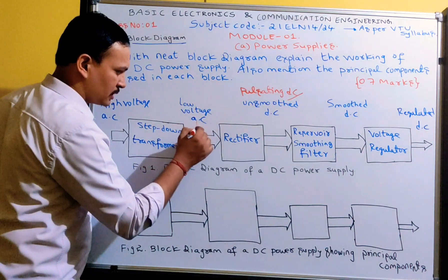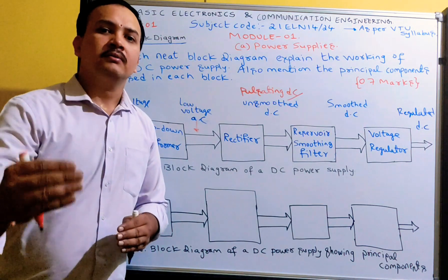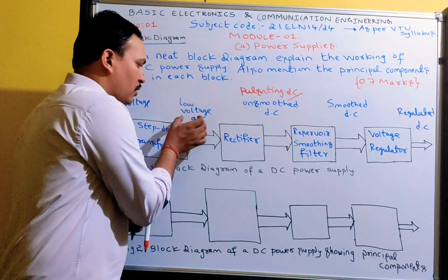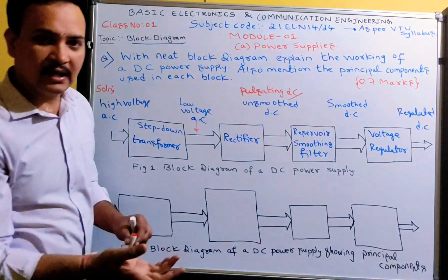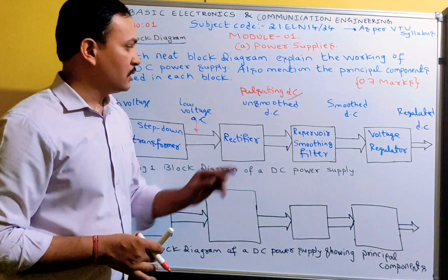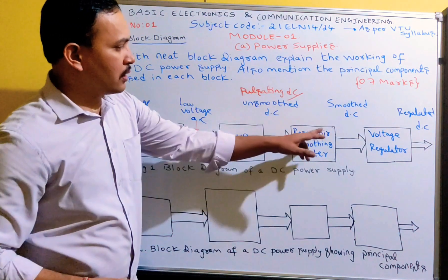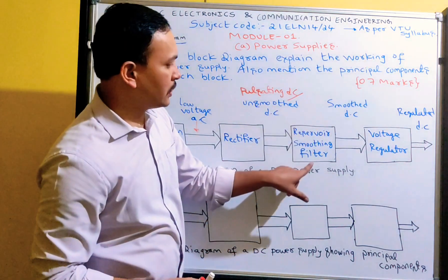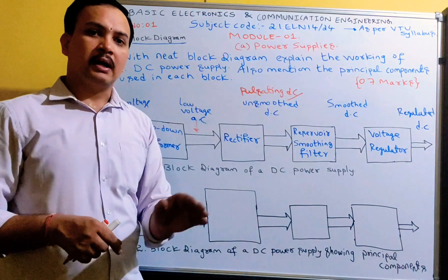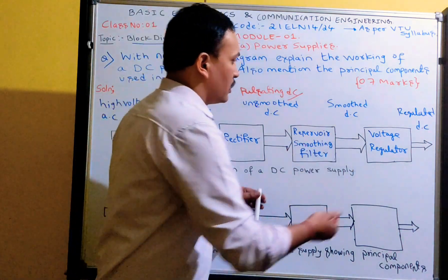This low voltage AC is given to the rectifier. What the rectifier does is convert AC voltage into DC voltage — input is AC, output is DC. So the rectifier converts low voltage AC into low voltage DC. But this is not pure DC; it is pulsating DC or unsmoothed DC. This output of the rectifier is then given to the reservoir or smoothing filter.